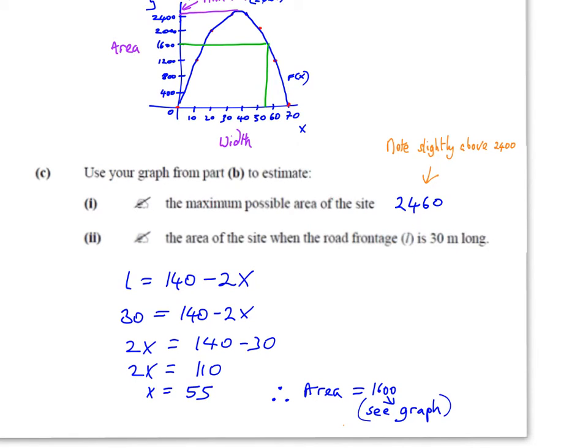The next question is particularly difficult if you don't know what these axes stand for. Find the area of the site when the road frontage l is 30 meters long. If you're not clued into the labels, you might just go to where it's 30 here and find the area. But that would be the wrong interpretation because they're talking about the length of the field, not the width.